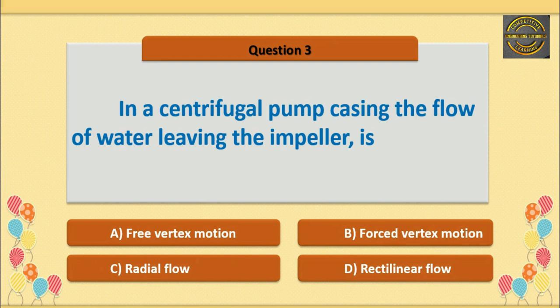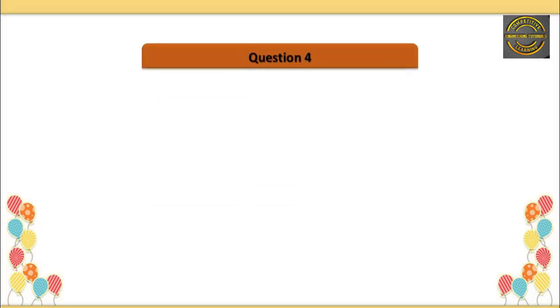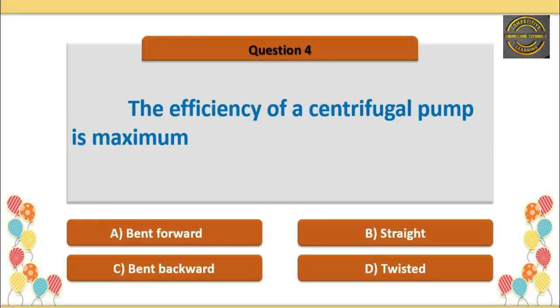Q3. In a centrifugal pump casing, the flow of water leaving the impeller is — option A is correct — free vortex motion. Q4. The efficiency of a centrifugal pump is maximum — option C is correct — when vanes are bent backward.